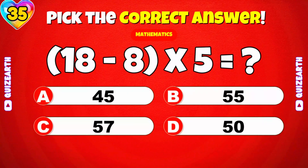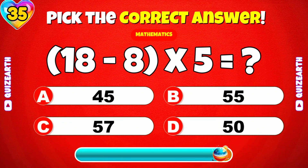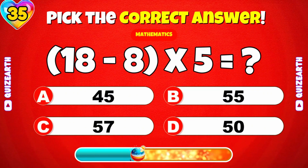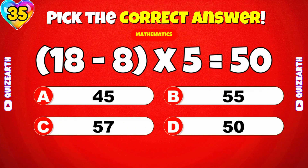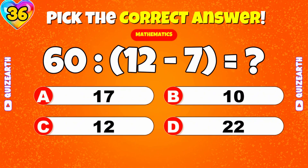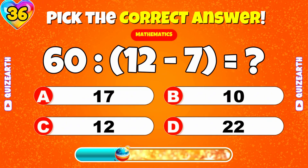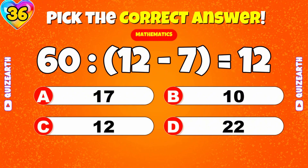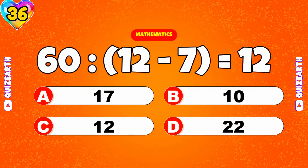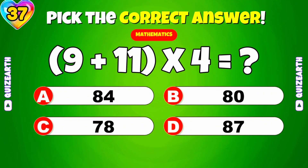10. What is 18 minus 8 times 5? 50. What is 60 divided by 12 minus 7? Brilliant, 12. What is 9 plus 11 times 4?